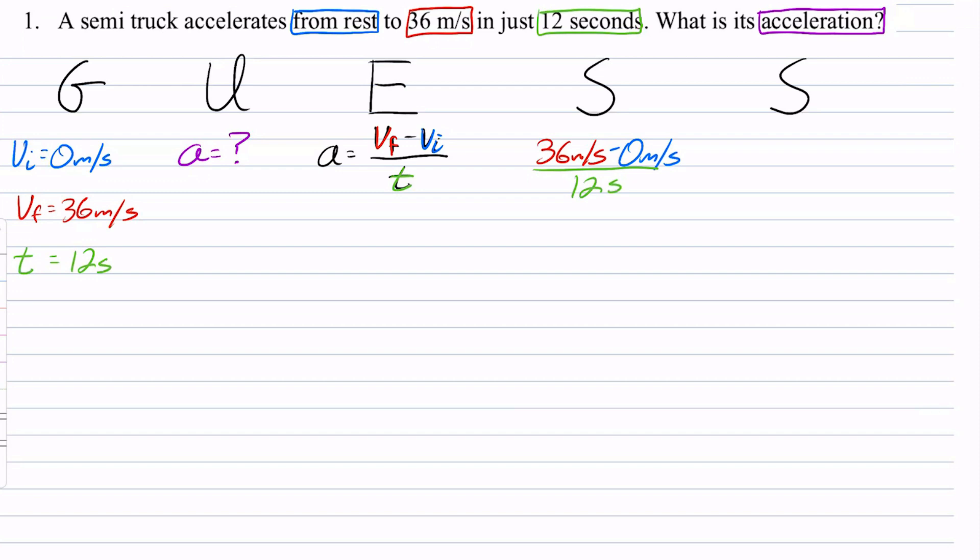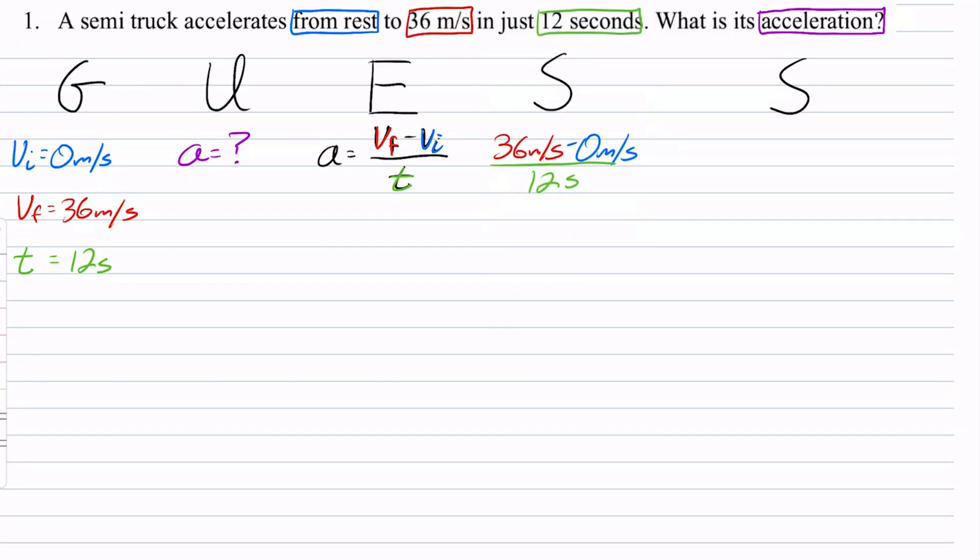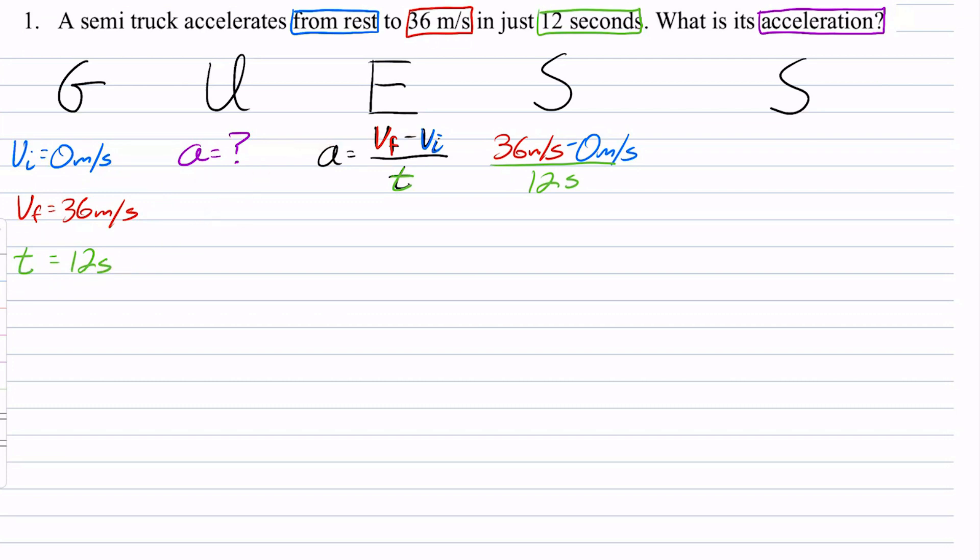So again, all I did here. I'm going to shift this over just a little bit. All I did was take this formula and put these values into it. So I put my initial velocity here, my final velocity here, and my time here. And that's how I got this.